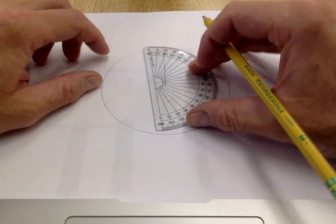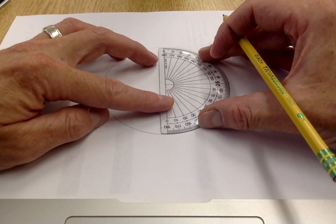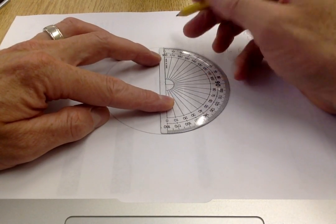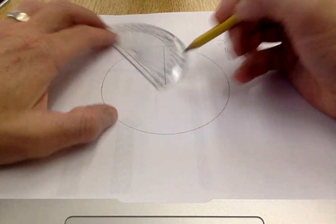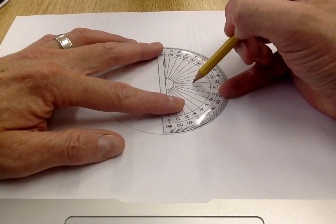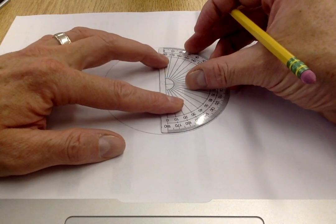I'm going to make a 155 degree angle first. So I'm going to put my protractor so that the line that I have already drawn ends right where the protractor has the upright line from 90 meeting the bottom line, just like that.